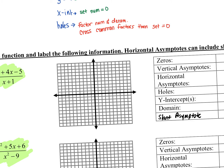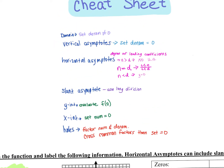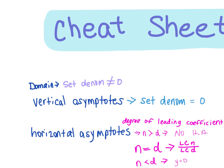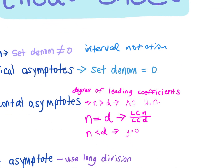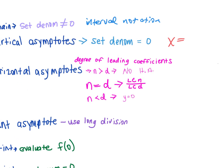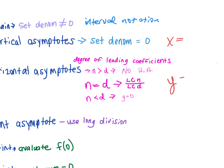Zeros is the same as x-intercepts. Remember, when we write our domain, it needs to be in interval notation — from negative infinity to positive infinity, that sort of thing, brackets and parentheses. Your vertical asymptotes need to say x equals. When we talk about the horizontal asymptote, it needs to say y equals.